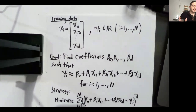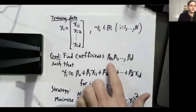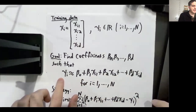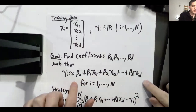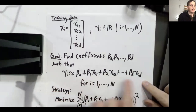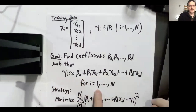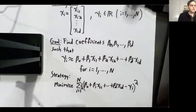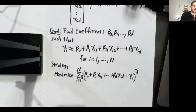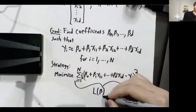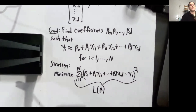Our goal in linear regression is to find coefficients beta naught through beta d such that yi, the selling price of the ith house in our training data set, is approximately equal to this weighted combination of the features xi1 through xid, and we hope this approximation is good for each house in the training data set. We choose these coefficients to minimize a cost function — this objective function — typically called L of beta, by solving an optimization problem.